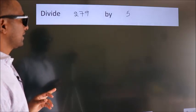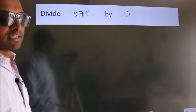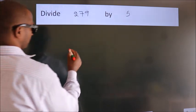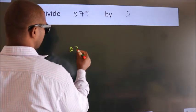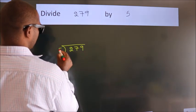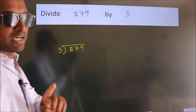Divide 279 by 5. To do this division, we should frame it in this way: 279 here, 5 here. This is your step 1.